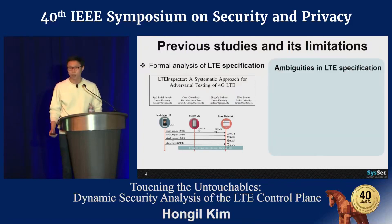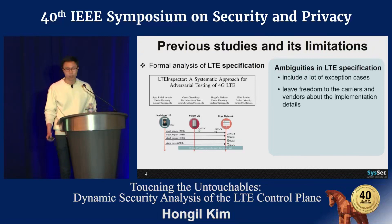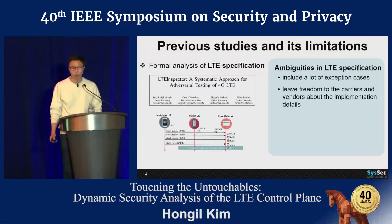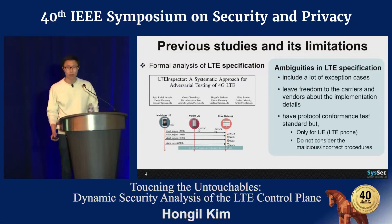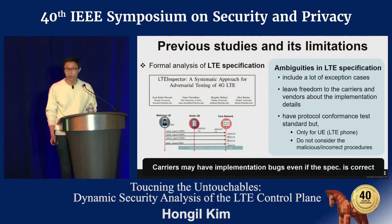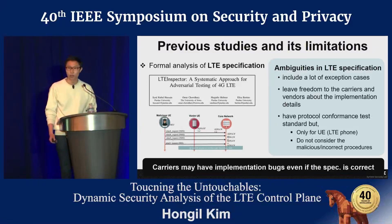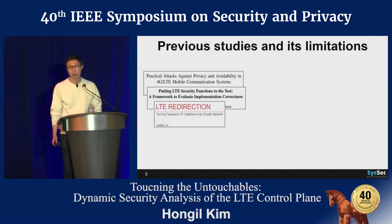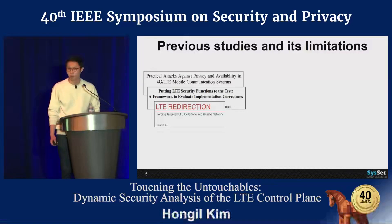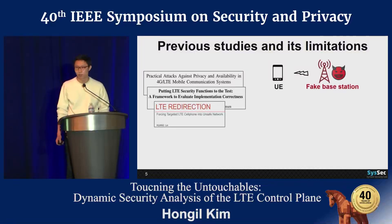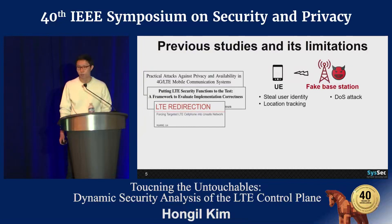There are several ambiguities in LTE specifications. They include a lot of exception cases and leave freedom to carriers and vendors about their implementation details. Several studies regarding the implementation of LTE control plane have mostly focused on attacks using fake base stations. Using this fake base station, the attacker can steal user identity, track the user's location, or perform denial-of-service attacks on the victim.